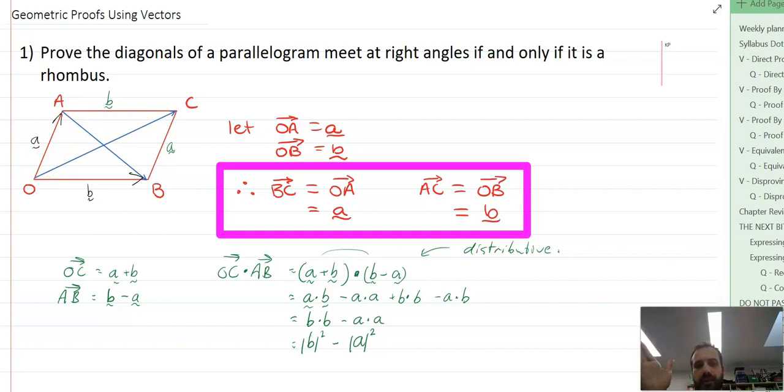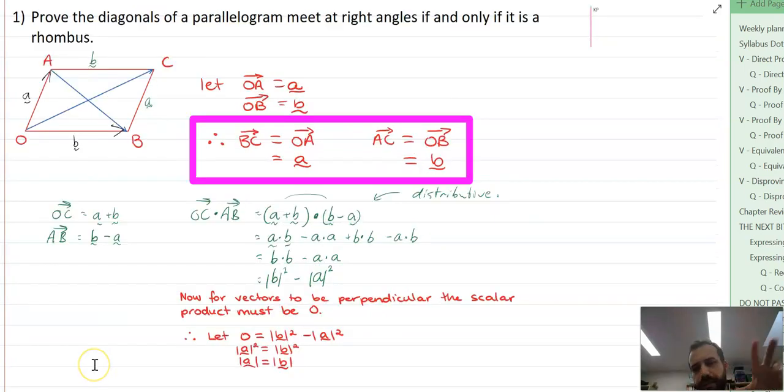You might want to pause for a minute here and think about where we're going with this. Prove the diagonals of a parallelogram meet at right angles if and only if it is a rhombus. A rhombus has equal lengths everywhere. We're doing our dot product here. We know that for them to be right angles, the dot product has to equal zero. We're getting pretty close to the end of the proof here. For vectors to be perpendicular, the scalar product must be zero. So if I let zero equal B squared minus A squared, because we know that that's our dot product of OC dot AB, then we can say that A squared equals B squared. Therefore, A equals B. The magnitude of A equals the magnitude of B. Therefore, it's a rhombus.